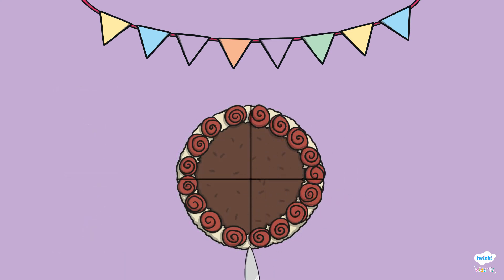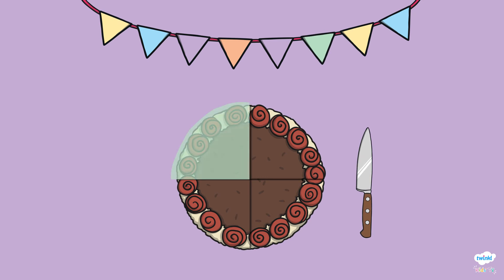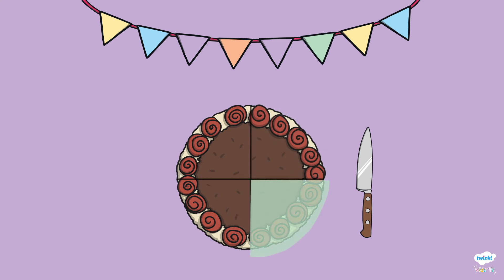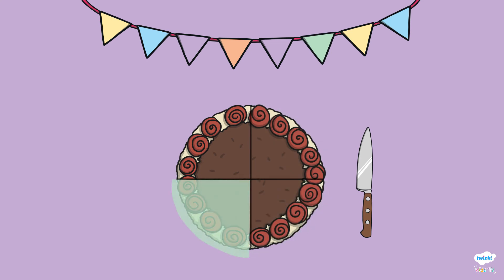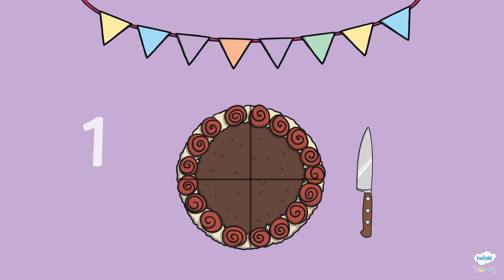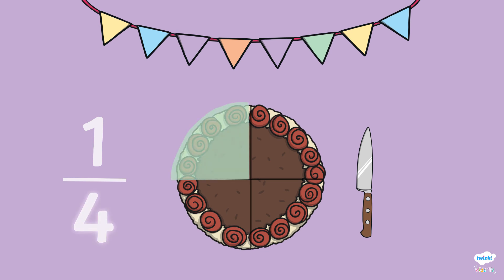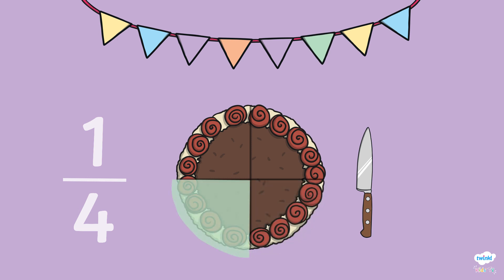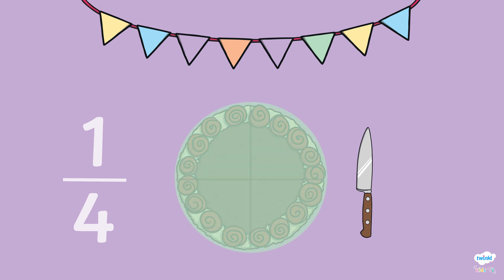We need to cut the cake into four pieces so that there is enough for everyone at the party. Look at all the pieces light up. These are all quarters of the cake. One quarter of the cake lights up, so we represent this with the number one. Remember, as this is the numerator, we place it at the top of the fraction. As there are four pieces of the cake all together, we write four and place it at the bottom. This is our denominator.